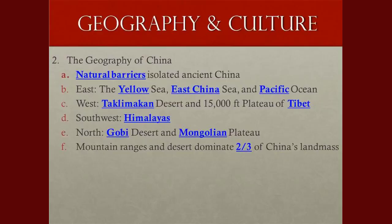The geography of China: China has natural boundaries all around it and is isolated because of these different boundaries. You've got deserts on the west, oceans on the east, the Gobi Desert to the north. To the south it's a little different, broken up into smaller nations which used to be part of China. The only real non-natural barrier is to the south. There's a 15,000-foot plateau in Tibet, the Taklimakan Desert, the Himalayas on the southwest separating India from China, as well as Nepal to the north, and the Gobi Desert. Mountain ranges and deserts dominate two-thirds of China's landmass.